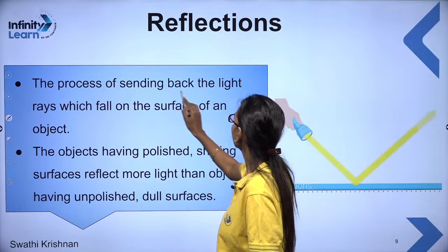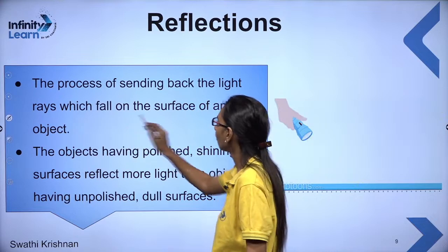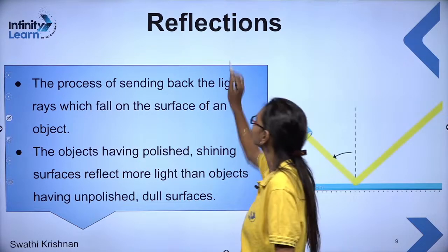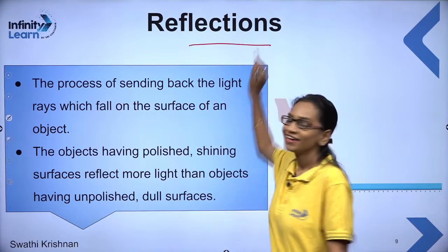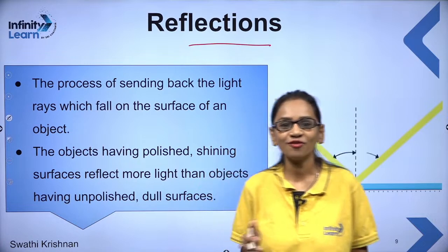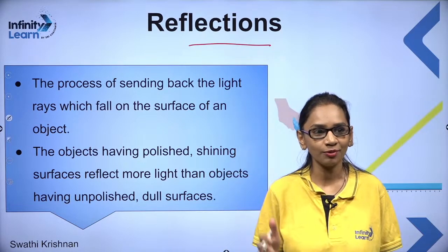The process of sending back the light ray which falls on the surface of an object is called reflection. Reflection of light is a very important property.